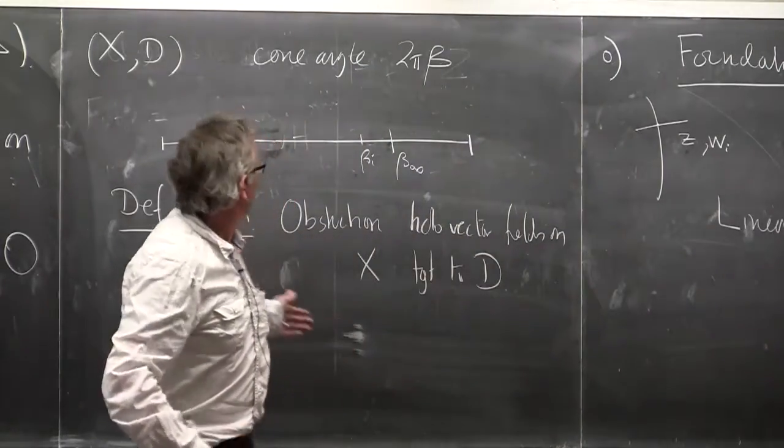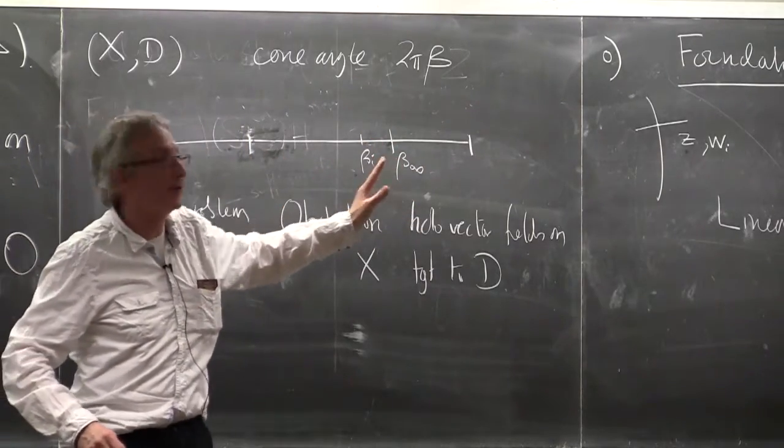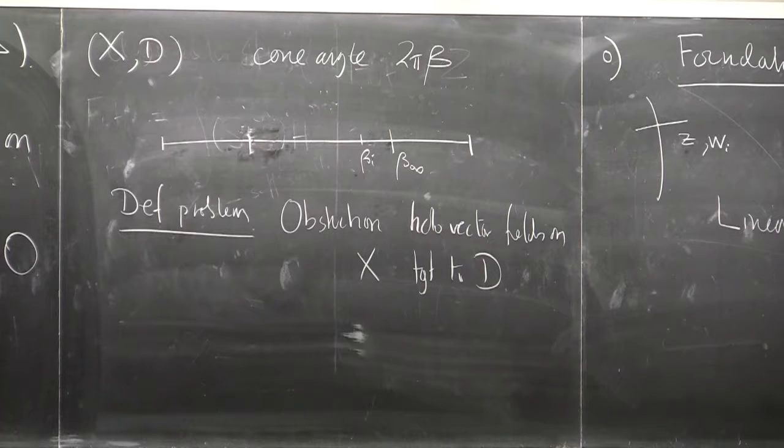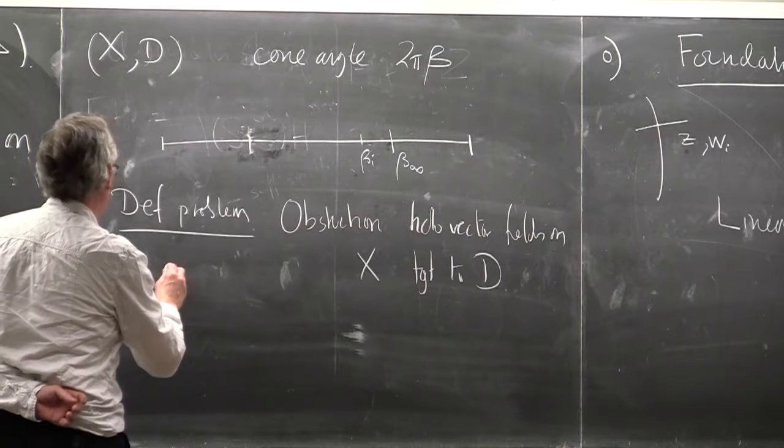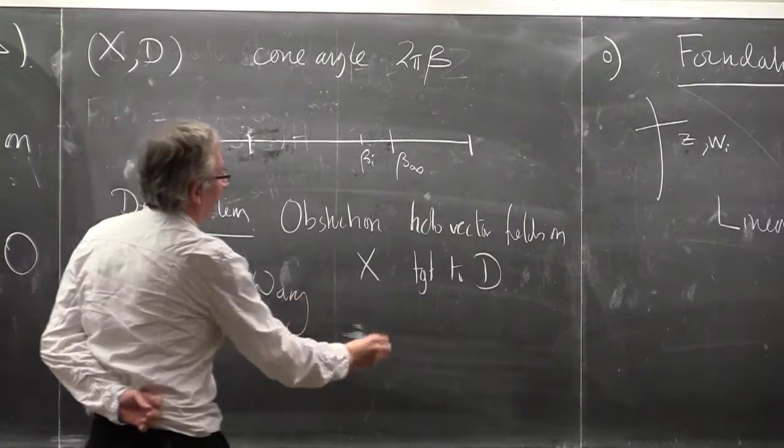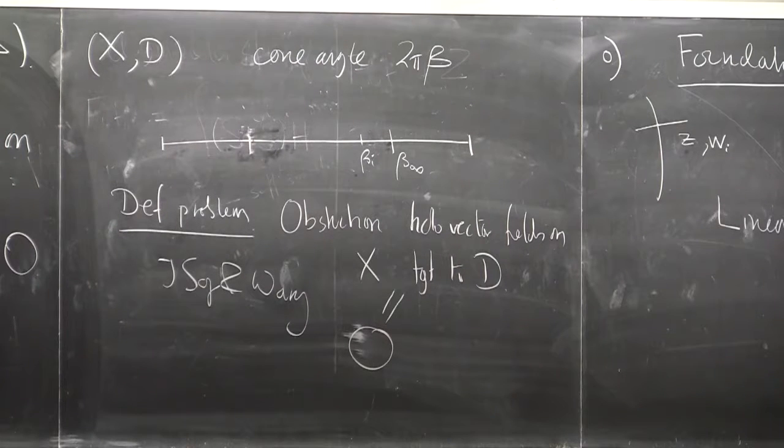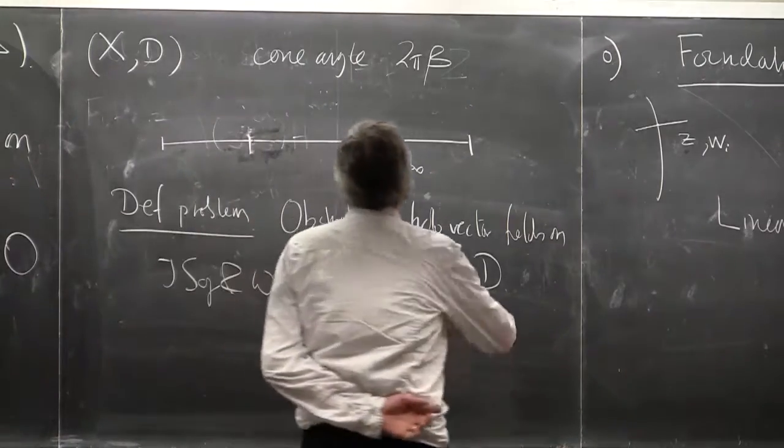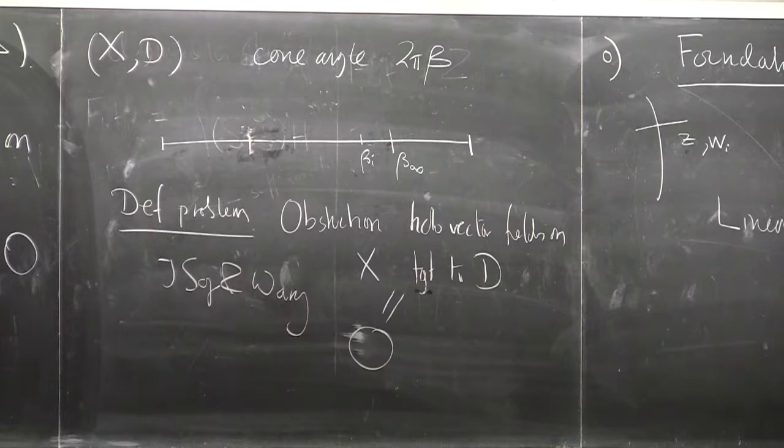If you have one of these, then there'll be a co-kernel of your operator which would potentially obstruct this deformation. But it's quite an easy, in fact this is done by Jian Song and Wang, that this space is zero in general. Although you apparently have this obstruction, actually when you look more carefully, it always vanishes. So you can always do this deformation.